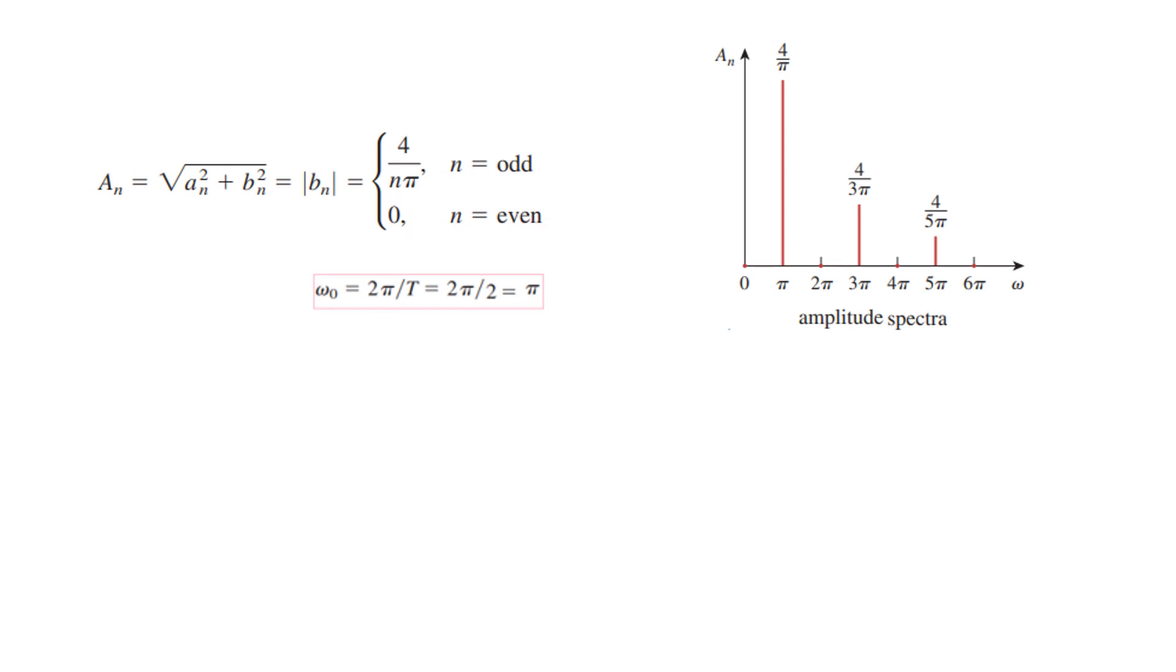Then we know that the even harmonics is 0. This n even 0. So we will go to the third one now. n equals 3. So we put n equals 3 here. Then it will be 4 divided by 3 pi. And similarly for 5 pi. So this is the amplitude spectra.